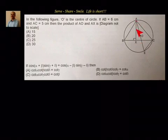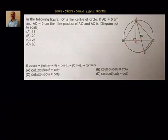Since we need AO × AX, can we say AO is nothing but half of AE? For AX, we want to leverage similar triangles. But to use similar triangles, we have to identify which two triangles are similar here, so the first step is to identify any angles.